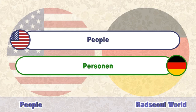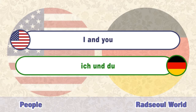People. Personen. I. Ich. I and you. Ich und du. Both of us. Wir beide.